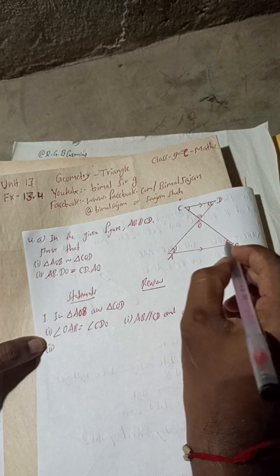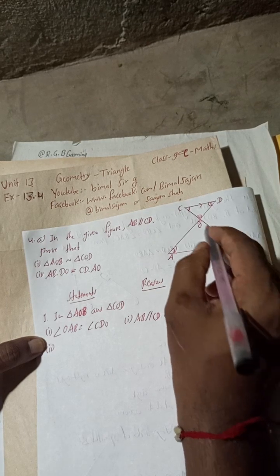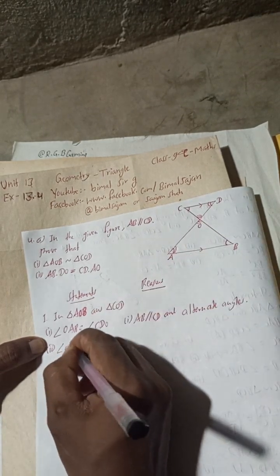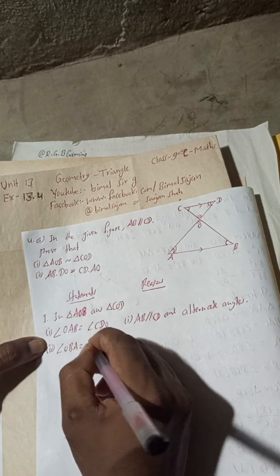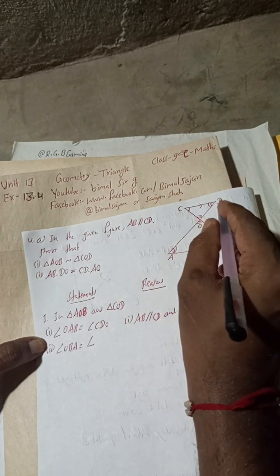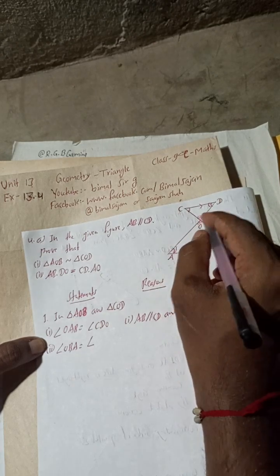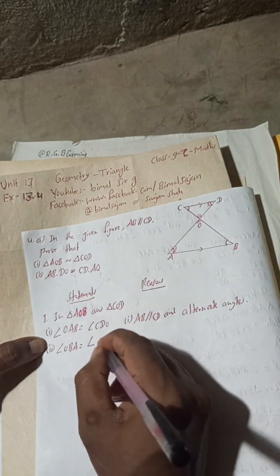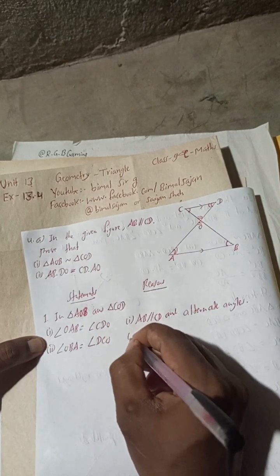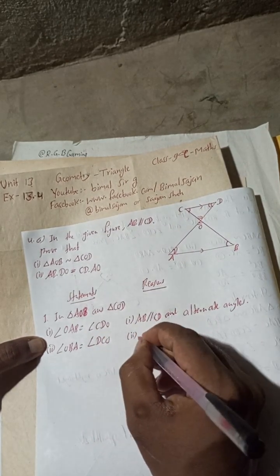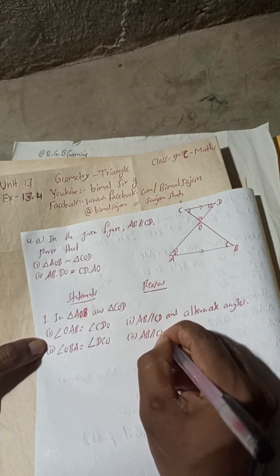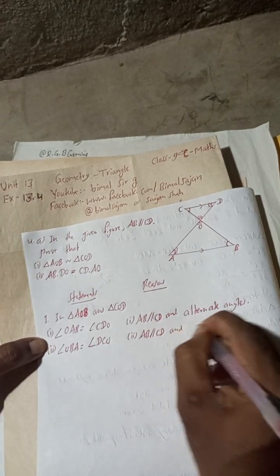Statement 2: Angle OBA is equal to angle ODC. Reason: AB parallel CD, and these are alternate angles — same reason.